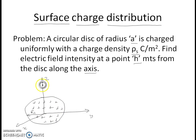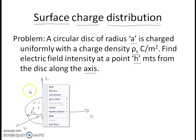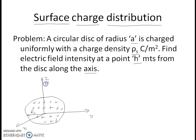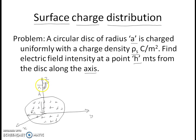Our problem is to determine the electric field at a point which is on the axis of the disk, that is the Z axis, and which is at a distance h from the center of the disk. We have this charge distribution over a surface which is a circular disk of radius R1, and we want to determine the electric field at a point P which is at a distance h from the center.